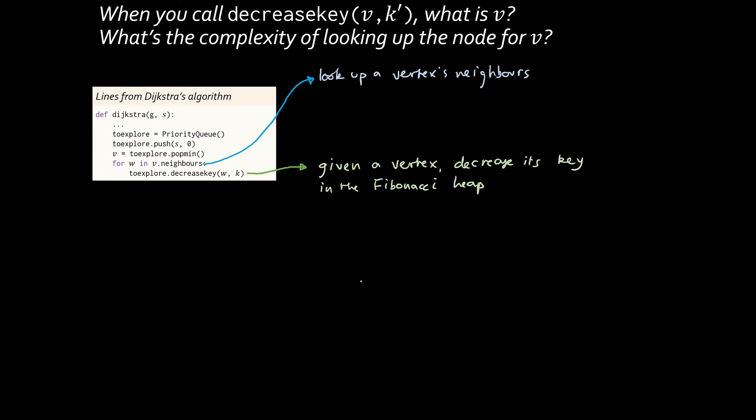Another operation I need to support is pop min. I need to be able to go to the priority queue, call pop min to get the item with the smallest key. But then that item, I need to be able to treat that item as a graph vertex, for example, to iterate through its neighbors in the graph.